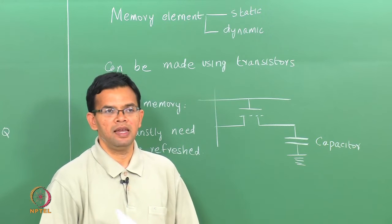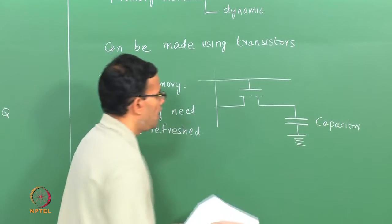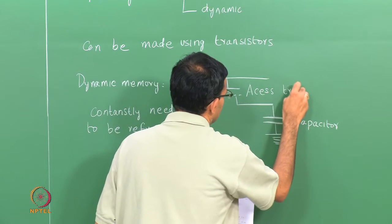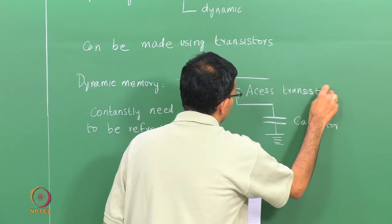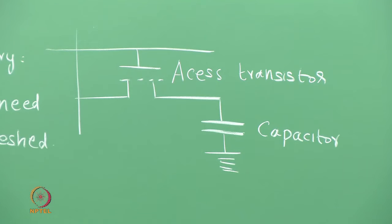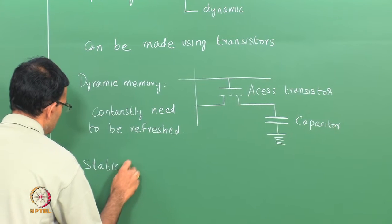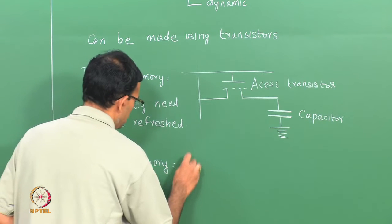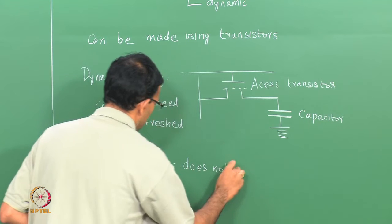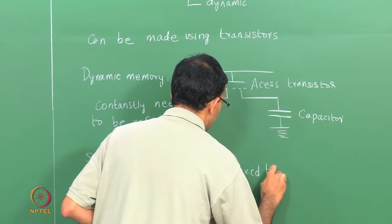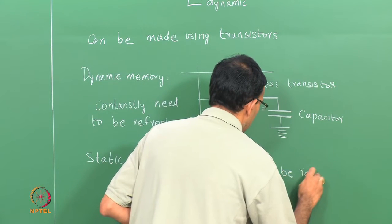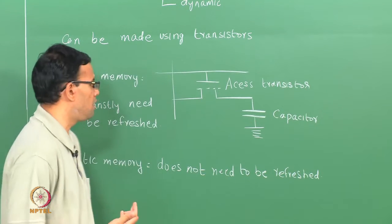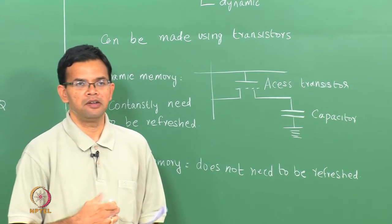Whenever you have a memory element, it also needs to be read, and this is done by using a transistor — this is called your access transistor. You could also have static memory elements, which do not need to be refreshed. These are formed by using multiple transistors in order to store and retrieve the information.